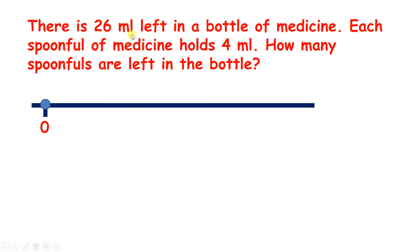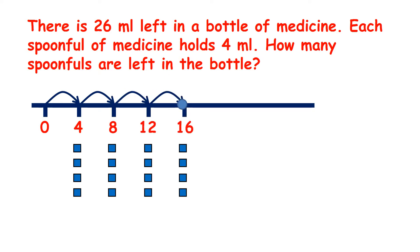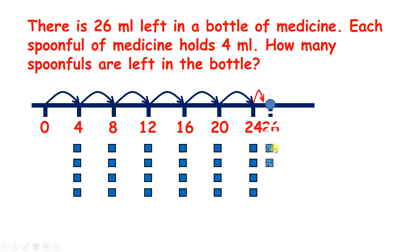There is 26 millilitres left in a bottle of medicine. Each spoonful of medicine holds four millilitres. How many spoonfuls are left in the bottle? So let's divide 26 by four. If we count up in fours, we have four, eight, twelve, sixteen, twenty, twenty-four. Twenty-eight is next, but twenty-eight is too many, so let's go back to twenty-four. And if we're on twenty-four, we need two more to get to twenty-six, so we have two remainders.